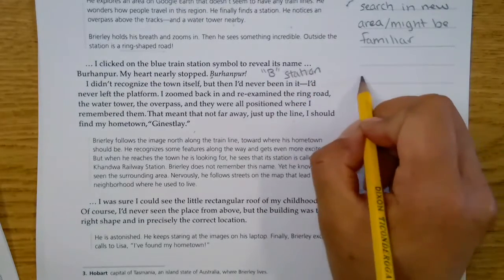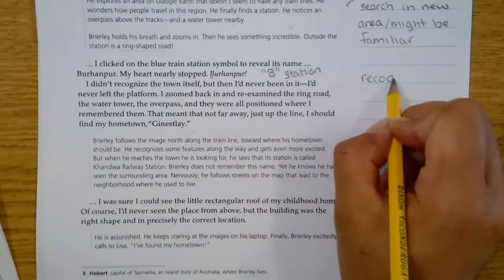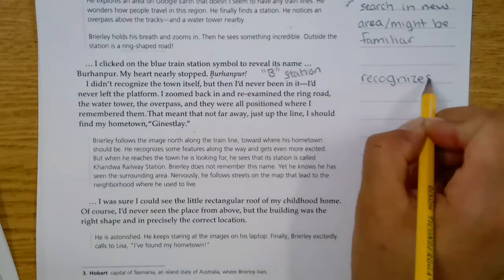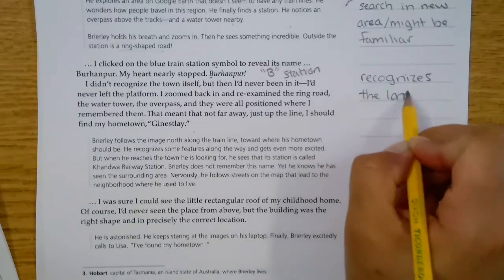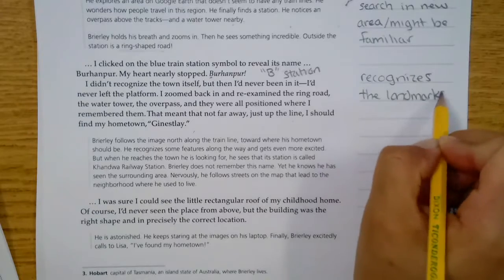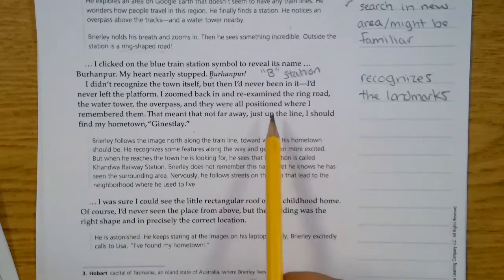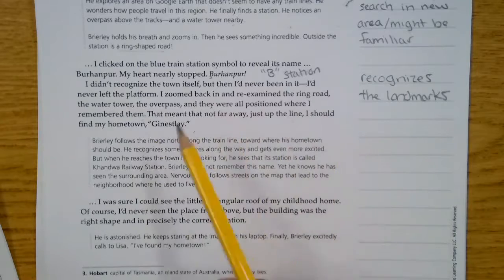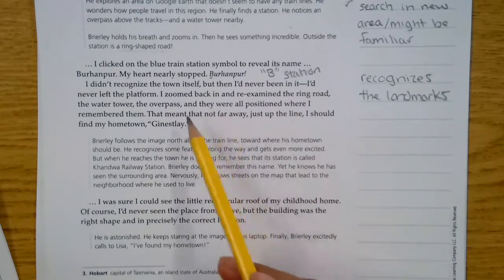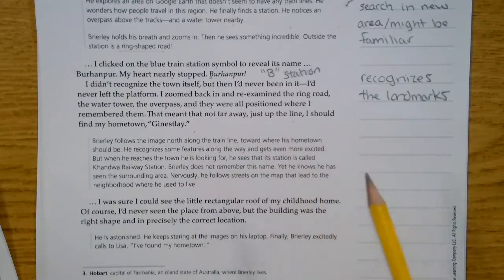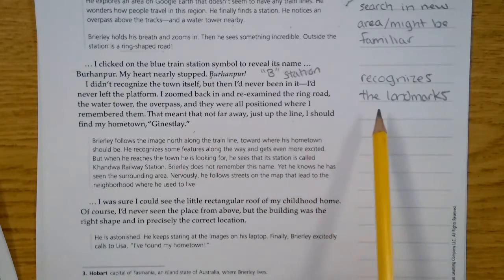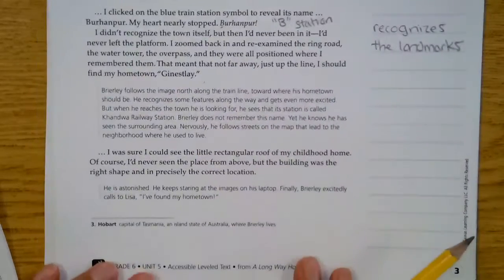I didn't recognize the town itself, but then I'd never been in it. I'd never left the platform. I zoomed back in and re-examined the ring road, the water tower, the overpass, and they were all positioned where I remembered them. That meant that not far away, just up the line, the train line, I should find my hometown, Ginstellet. So here is the B-station. We see that he's recognizing the landmarks, the water tower, the overpass, everything that he's looking at in Google Earth right here. He's like, wow, that looks, it looks just like what I remember. So he is hopeful that this is the place. His home.